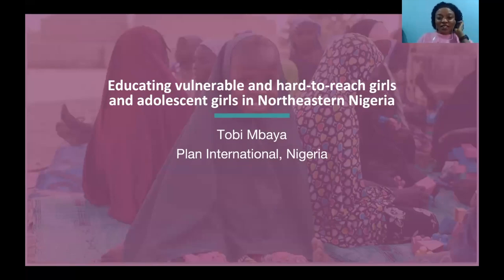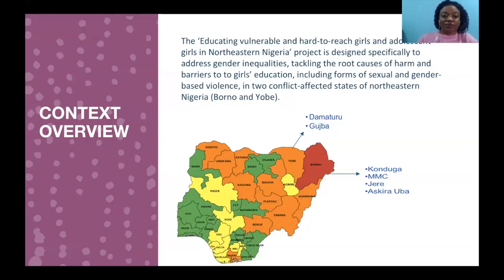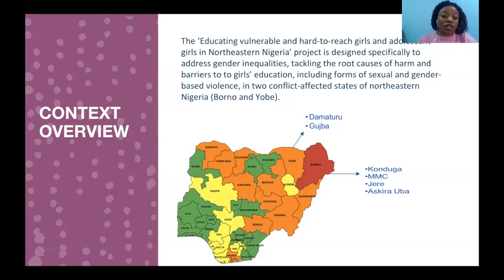My name is Toby Mbaya, and I'm from Plan International Nigeria, based in the northeastern state of Borno State. I'll be talking about the case study of how a multi-sectoral approach has been used in implementing the prevention framework or preventing child protection risk. So just a brief overview of the context: educating vulnerable and hard-to-reach girls and adolescent girls in northeastern Nigeria is a project that is funded by the Canadian government, and it is designed specifically to address gender inequalities, tackling root causes of harm and barriers to girls' education, including forms of sexual and gender-based violence. We're implementing across six local governments in two conflict-affected states of Borno and Yobe.